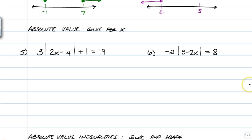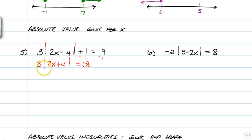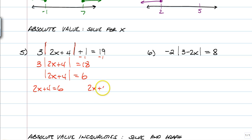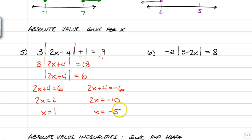Next is absolute value. First is just solving a basic equation. To do that, you need to get the absolute value part by itself. The first thing you do is subtract 1 from both sides, then divide both sides by 3. Now you take the inside and set it equal to 6, then take the inside again and set it equal to the opposite — negative 6. That gives you 2x equals 2, so x equals 1. And the other gives you 2x equals negative 10, so x equals negative 5. Since this is just an absolute value equation, we are not graphing. x is equal to 1 or negative 5.